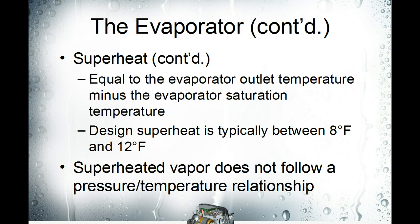We'll go through this in great detail, because this is what you need to do to charge and check the system. One of the measurements is superheat, and superheat is equal to the evaporator outlet temperature minus the evaporator saturation temperature. Most air conditioning systems will have the design superheat in the operation and maintenance manual, but a good rule of thumb is between 8 and 12 degrees Fahrenheit of superheat. One thing that trips up newer HVAC techs is they start looking at the pressure temperature chart, which is a saturated state of the refrigerant — superheated vapor does not follow the pressure-temperature relationship found on the pressure temperature chart.